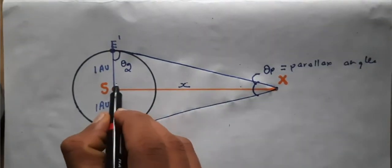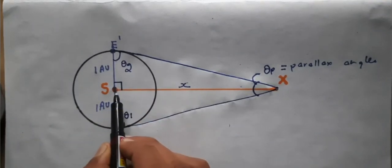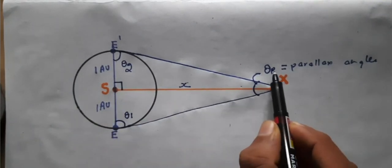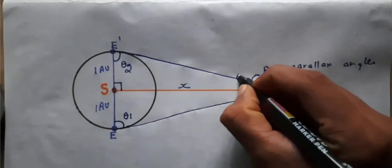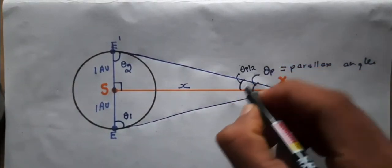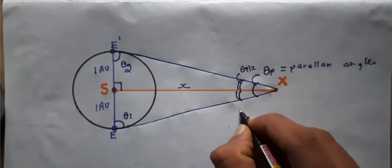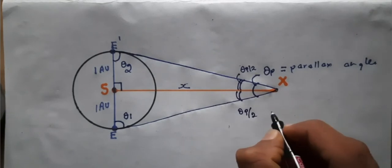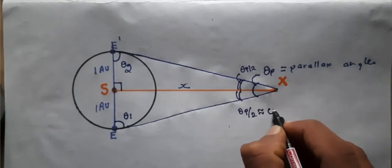And this is of course 90 degrees. And this line from the Sun divides θₚ equally into two parts, that is, θₚ/2 and θₚ/2. I can take θₚ/2 as simply θ.